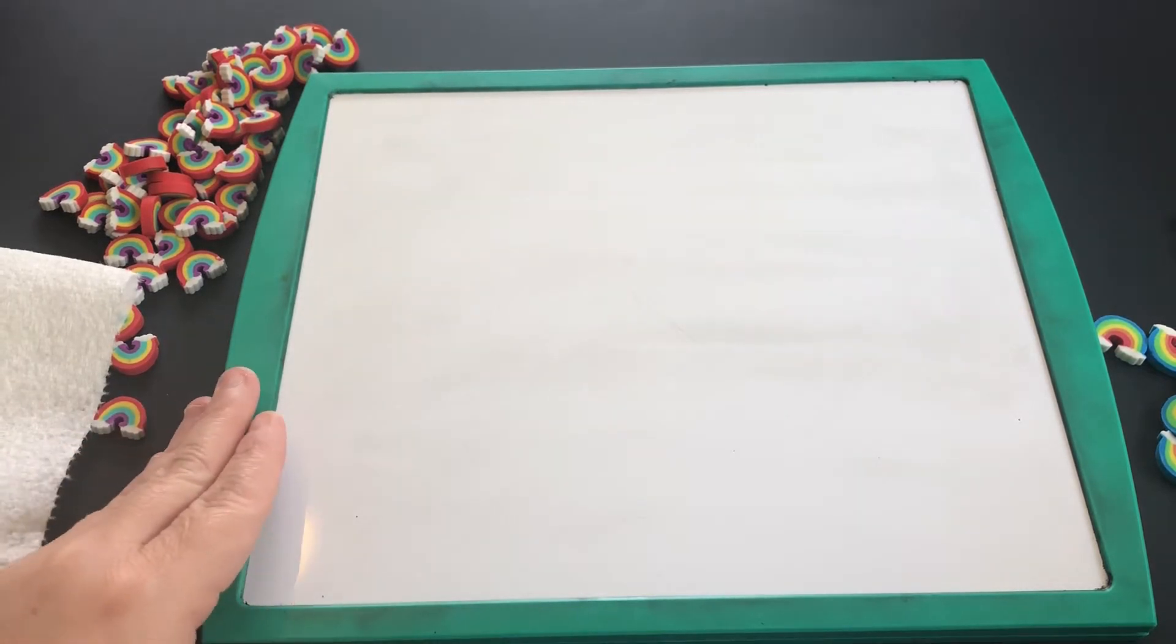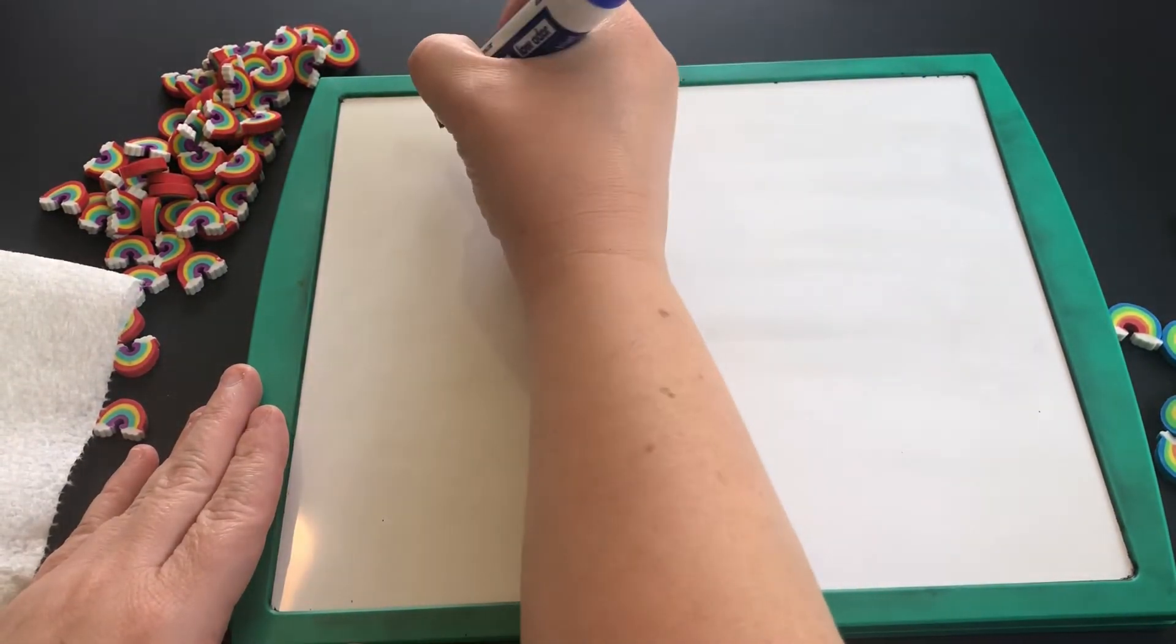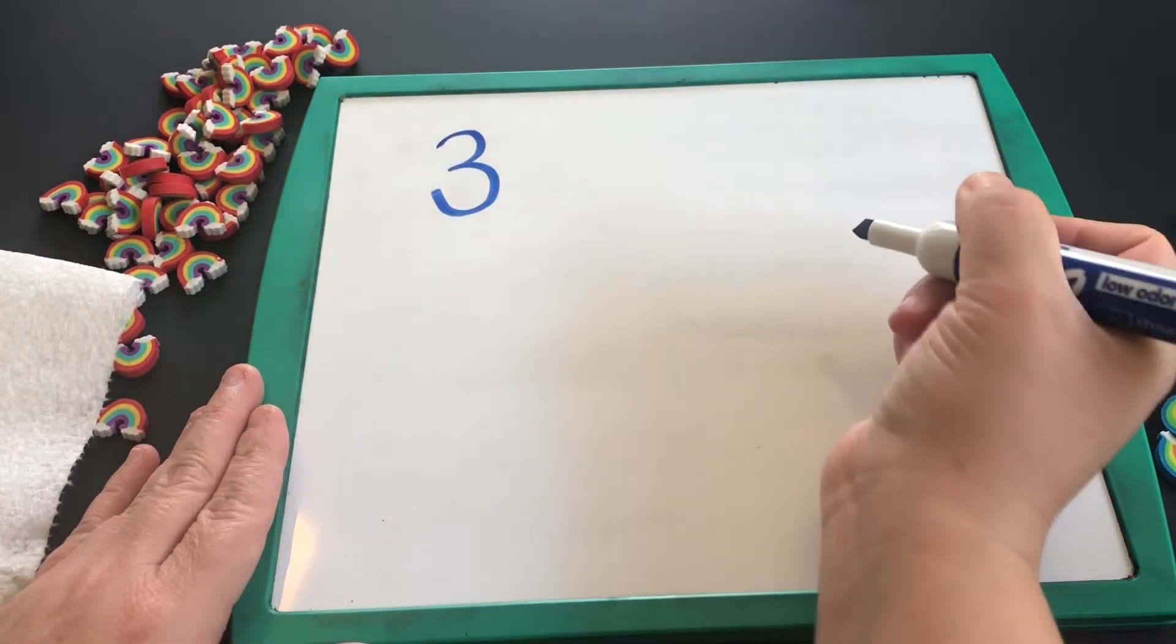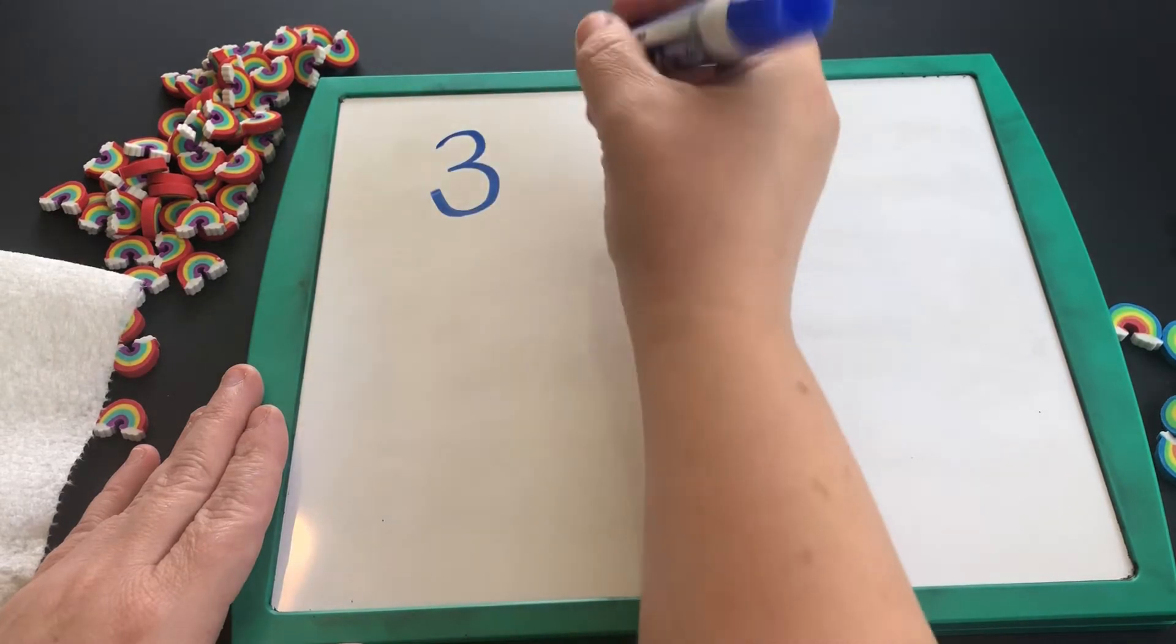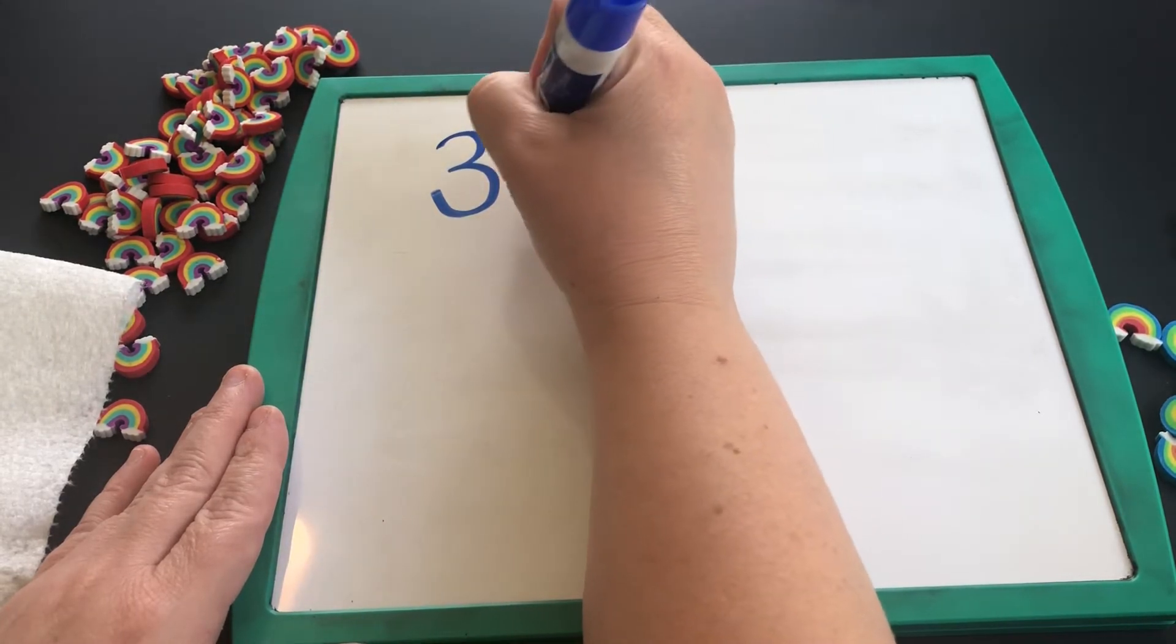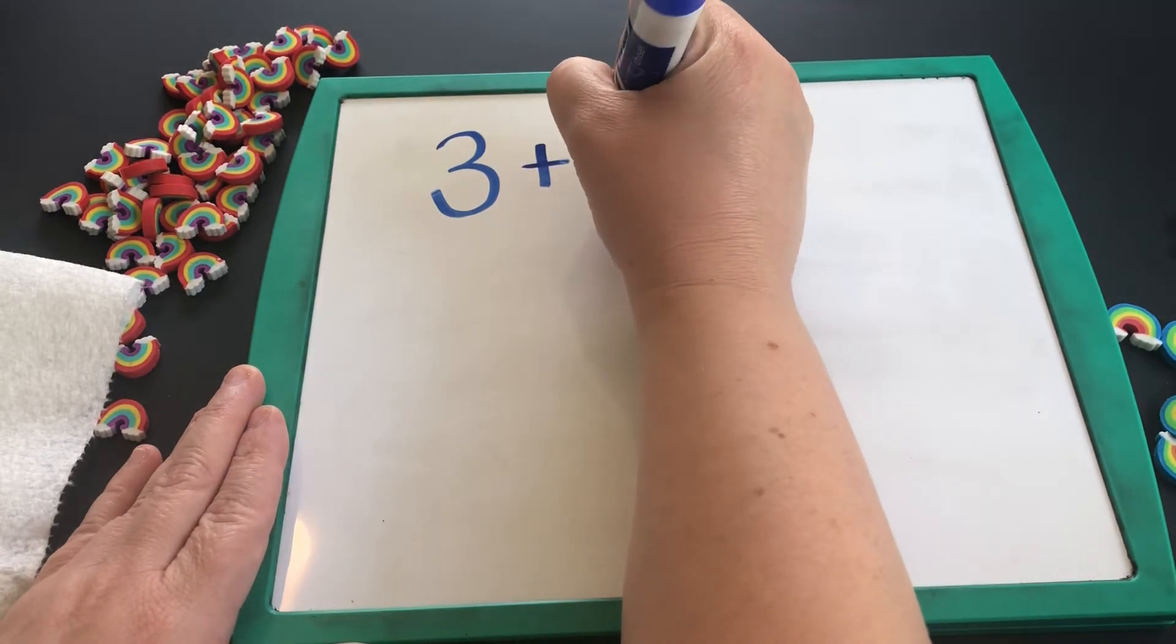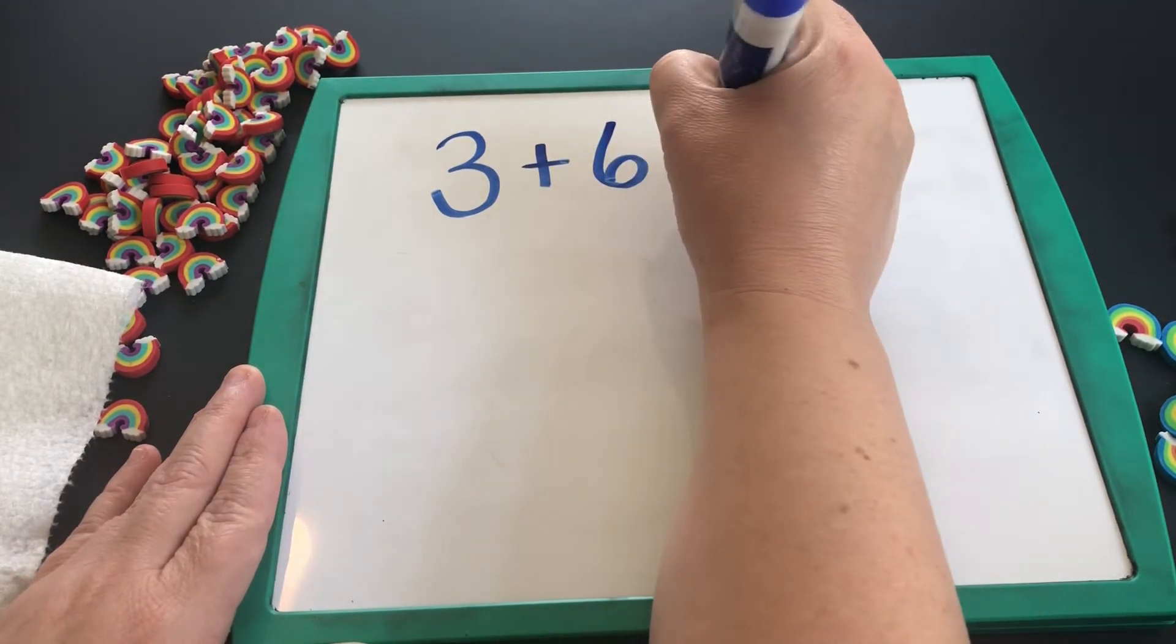So I'd like to try a few problems with you now. If I have the number three and then I add—I'm going to use my addition symbol, this is a plus sign—six, how many does that equal?